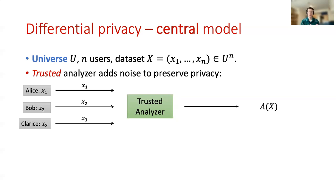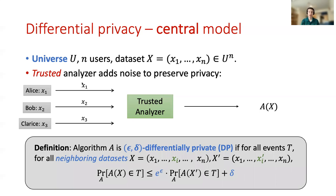In the central model, each user sends their data point x_i to a trusted analyzer — this could be a computer operated by a large company or a government. The trusted analyzer adds noise to the desired statistics of the dataset X, and we denote the output by A(X), which is in general a random variable. The algorithm A is defined to be epsilon-delta differentially private if, for all neighboring datasets X and X' differing in a single element, the probability of any event T under X is at most e^epsilon times the probability of T under X', plus an additive term delta.